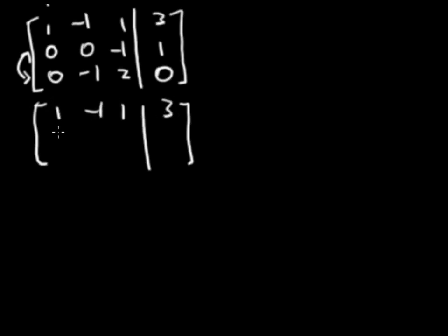So this step, I'm going to switch row 2 and row 3. And that will be a step in itself. And we're going to do just that. So now the second row will be row 3 with 0, negative 1, 2, 0. And row 3 will be 0, 0, negative 1, 1.